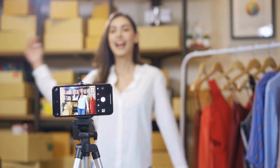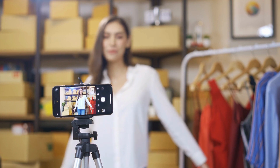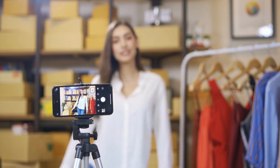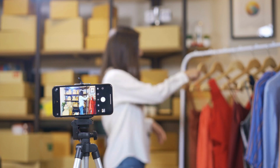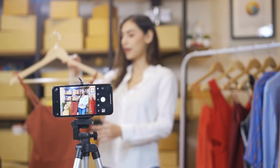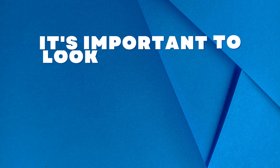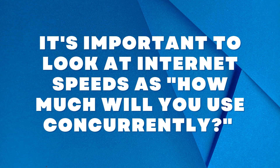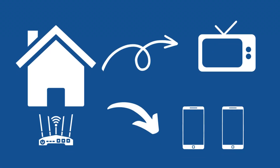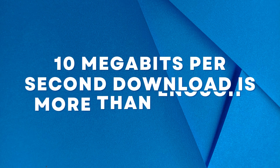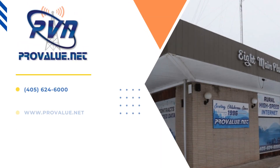Online browsing uses very little download speed at a time because it only uses bandwidth while loading a page. For live streaming, look at upload speeds — depending on the quality of the content, recommended upload speeds start at as little as 3 megabits per second. It is important to look at internet speeds in terms of how much you will use concurrently. For example, a home that streams a movie on the TV and browses the internet on two phones all at the same time — 10 megabits per second download is more than enough.